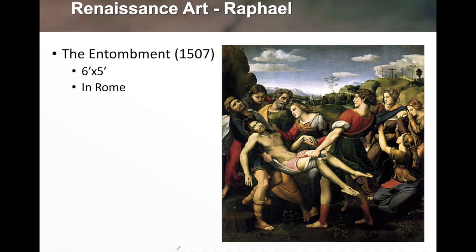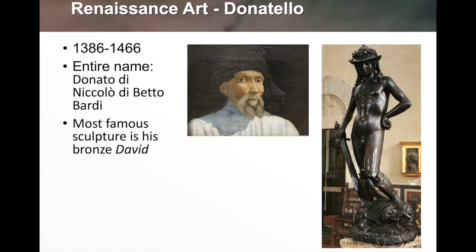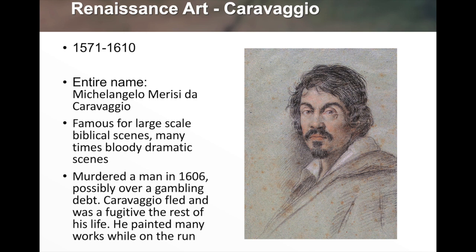Raphael's Entombment, 1507, is a six-foot by five-foot painting in Rome depicting Jesus being brought down from the cross to be placed in the tomb. Notable in the image is a figure wearing clearly Renaissance-era clothing. Donatello — his full name shown on screen — lived from 1386 to 1466, making him earlier Renaissance. His most famous sculpture is the Bronze David: a young man, perhaps late teens, wearing a Renaissance hat and holding the sword of Goliath.